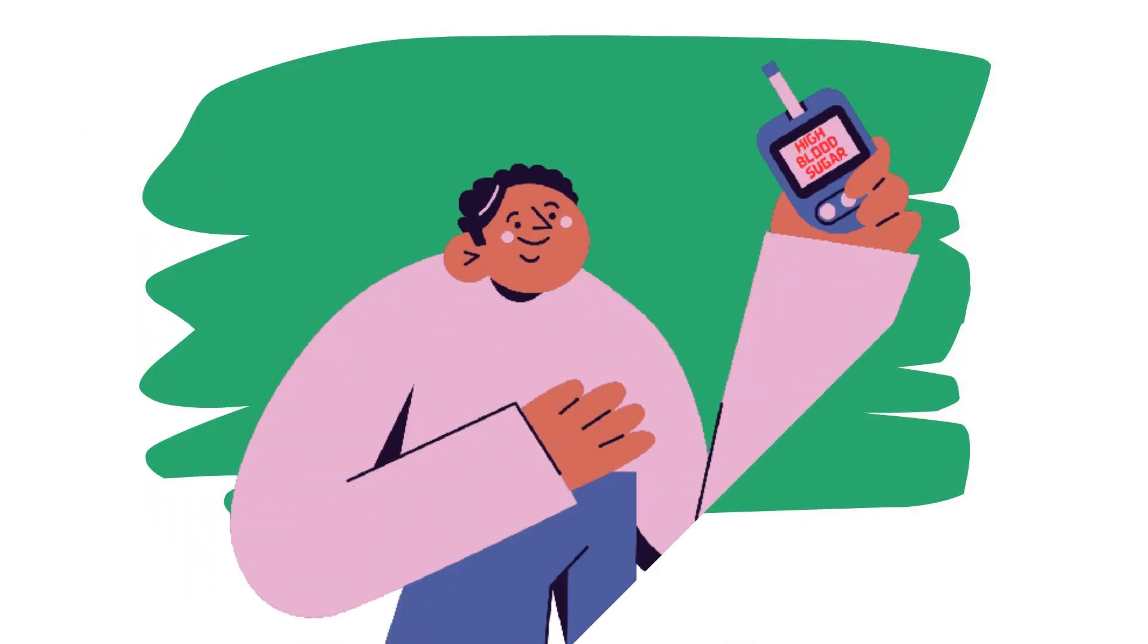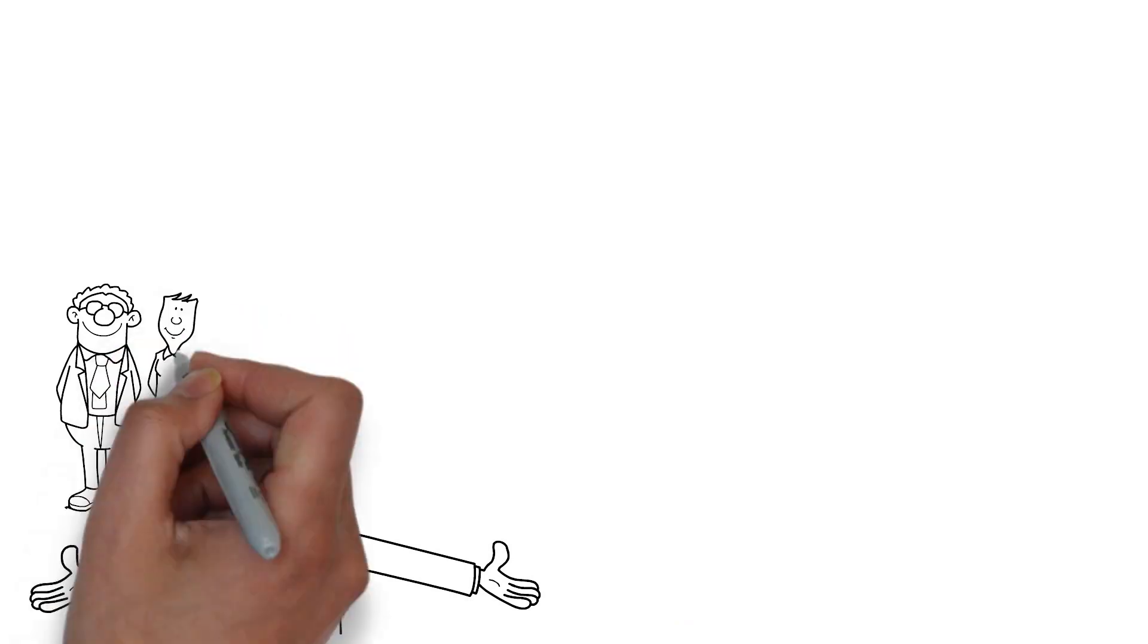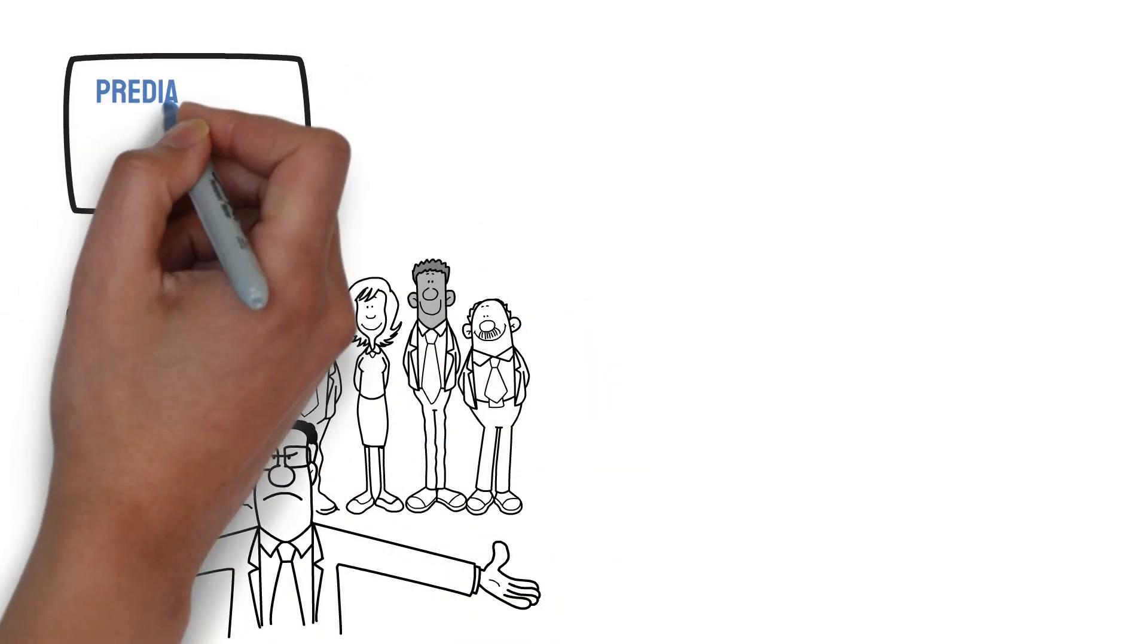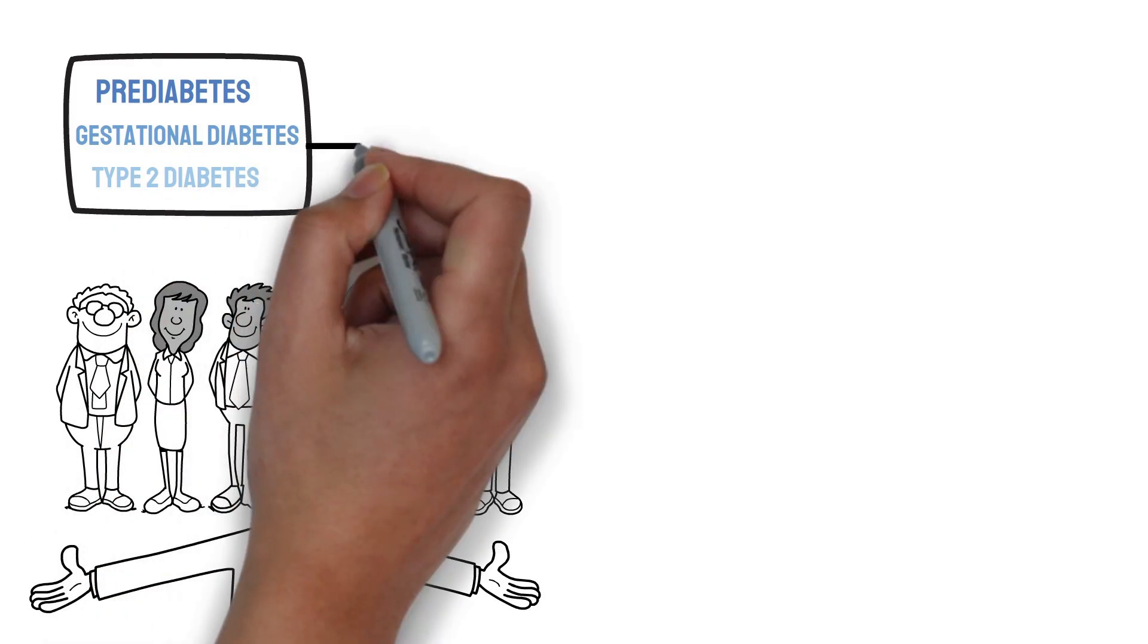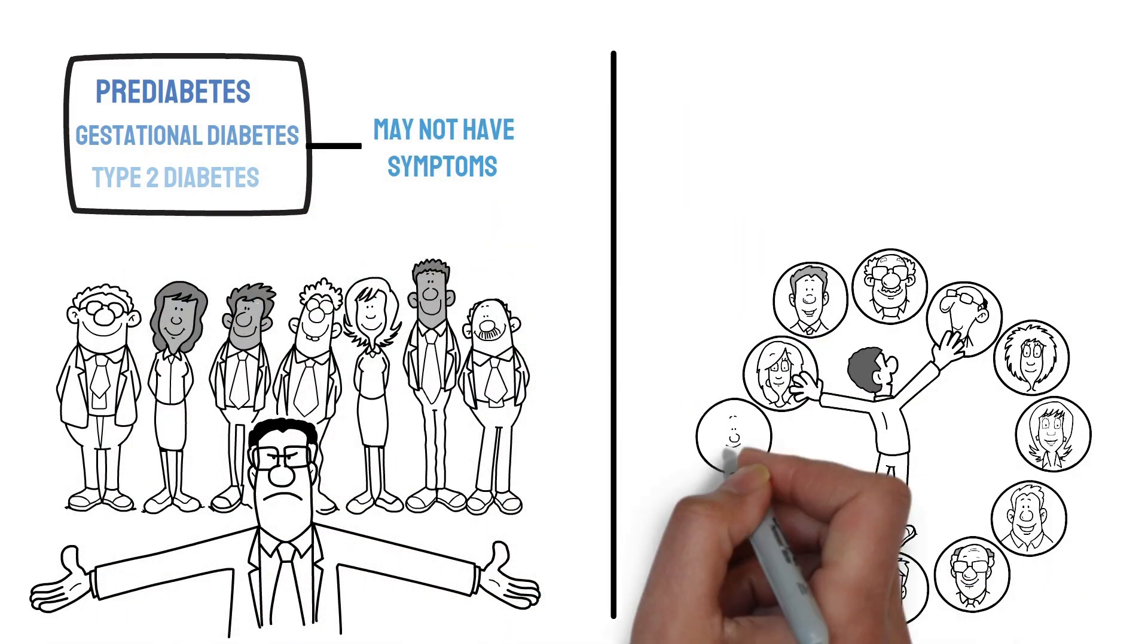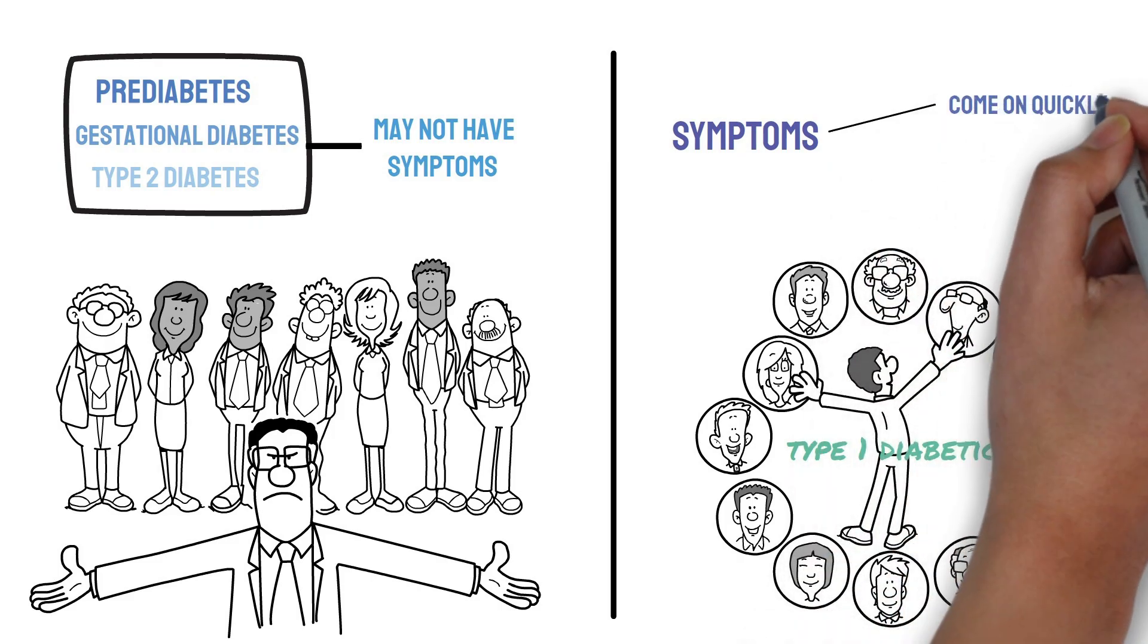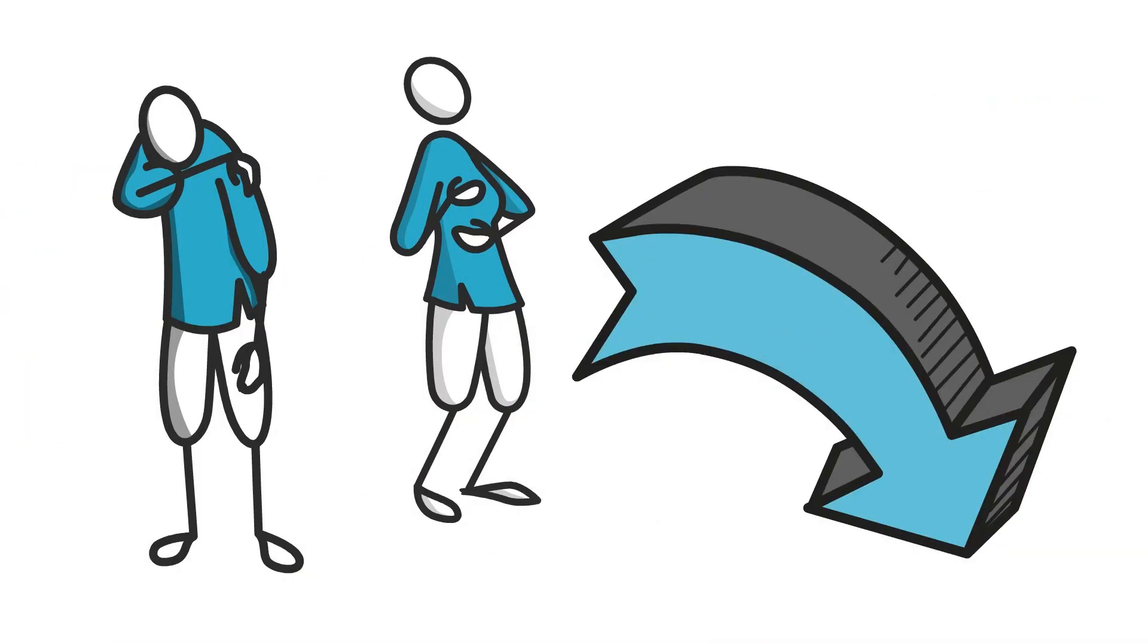Diabetes symptoms depend on how your blood sugar is. Some people, especially if they have prediabetes, gestational diabetes, or type 2 diabetes, may not have symptoms. In type 1 diabetes, symptoms tend to come on quickly and they tend to be more severe. Some of the symptoms of diabetes are as follows.